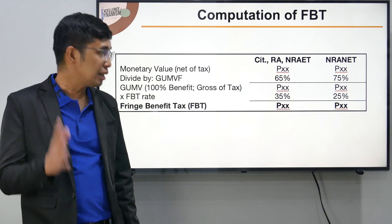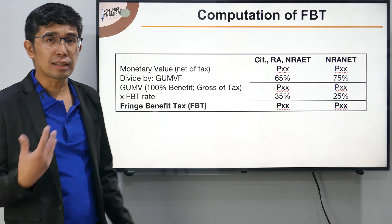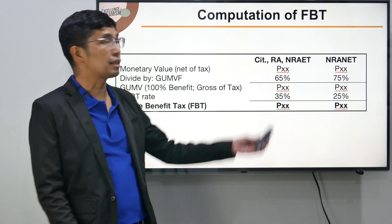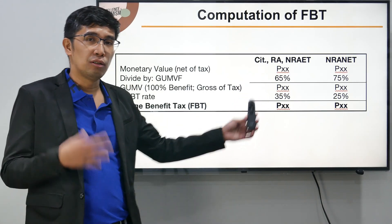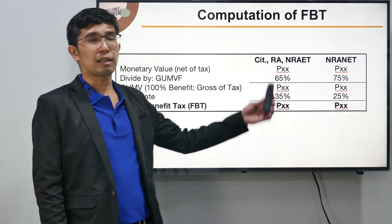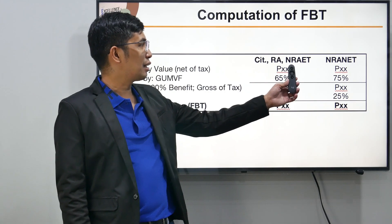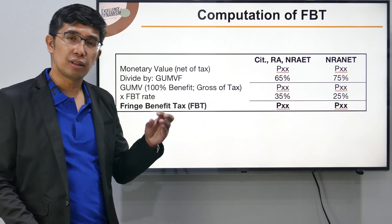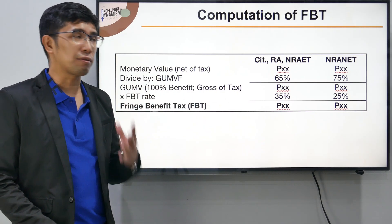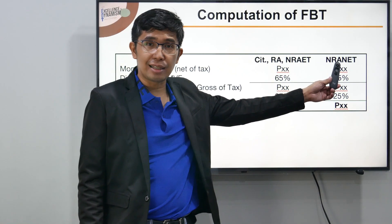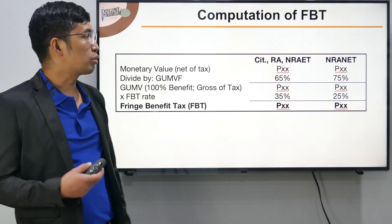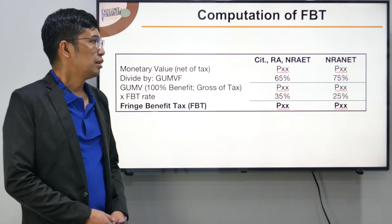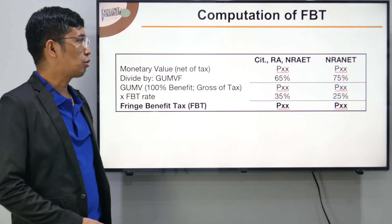In our first video on fringe benefit tax, we discussed that the FBT rate is generally 35%, on the assumption that the individual taxpayer subject to FBT is classified as a citizen — meaning resident citizen or non-resident citizen — including resident aliens and non-resident aliens engaged in trade or business. However, if the recipient of the fringe benefit is classified as an NRA not engaged in trade, the rate will be 25% instead of 35%.